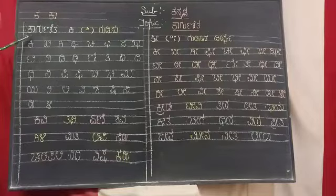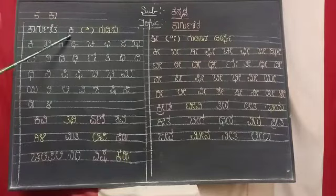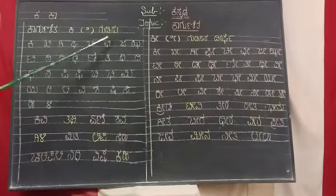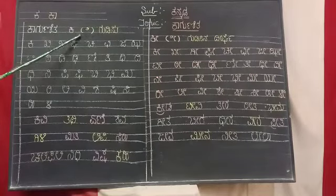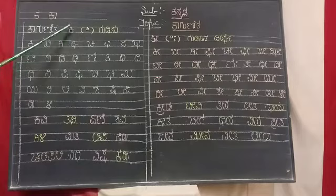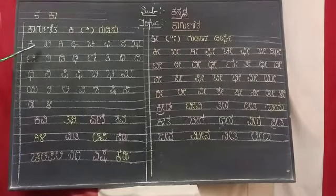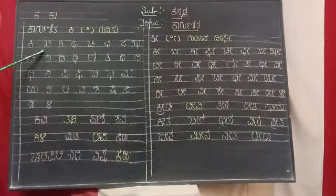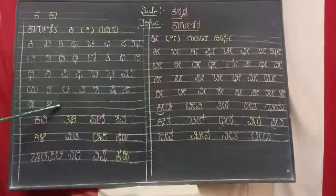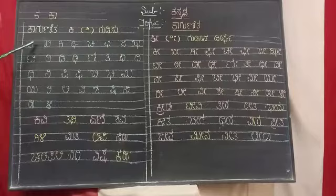Today I am going to teach you the third symbol of Kagunita, Gudisu. This is the symbol of Ki. Here I have taken Kartula consonants in the third letter of Kagunita Ki, Gudisu Ki, in each line of consonants.